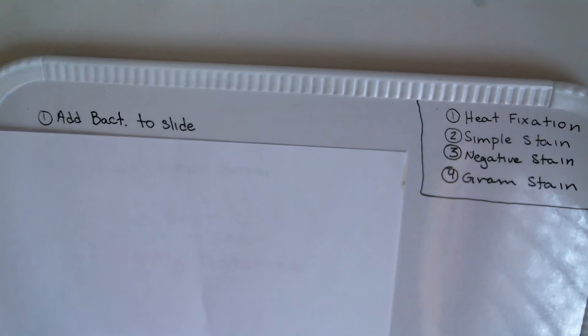The way that we would do that is we would first add the bacteria to the slide. So if it's in a test tube, we'll just take it right out of the broth and take anywhere from one to three loopfuls and let that dry. Typically, if you know that your bacteria is gram-negative, you'll use more loopfuls just because gram-negative cells are much smaller than gram-positive cells.